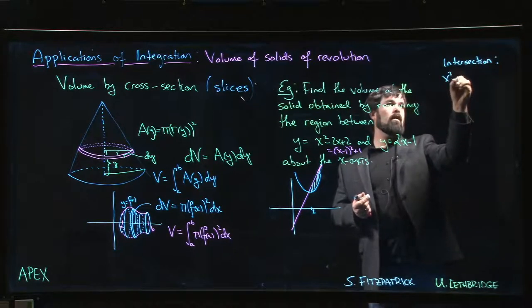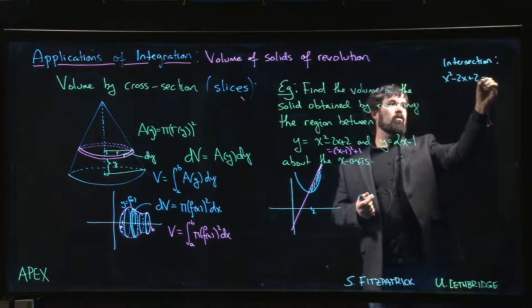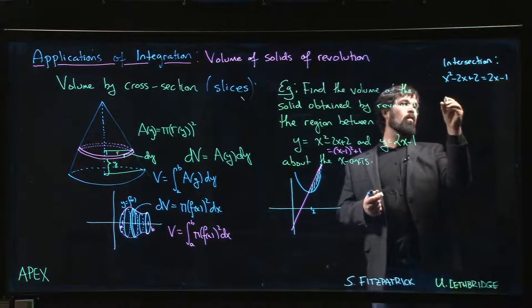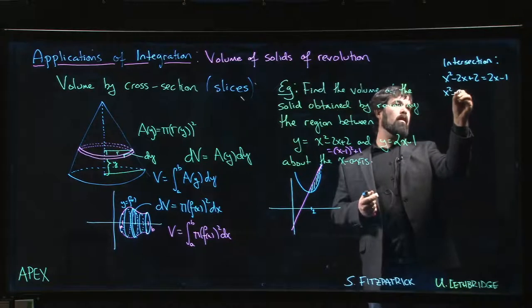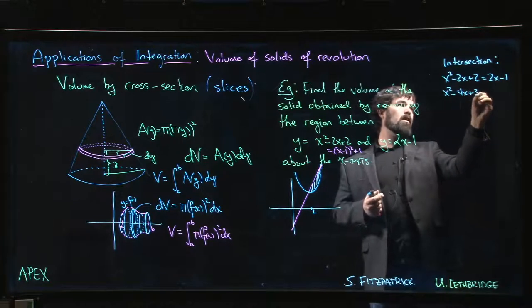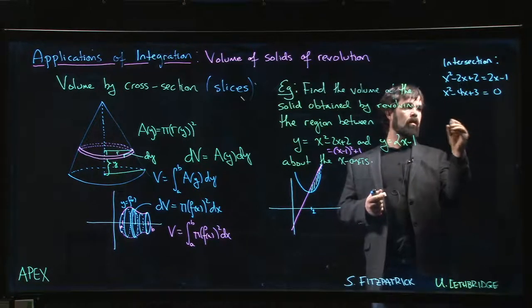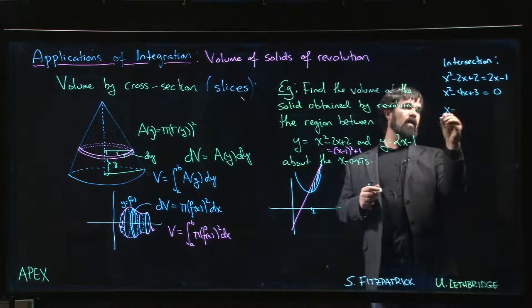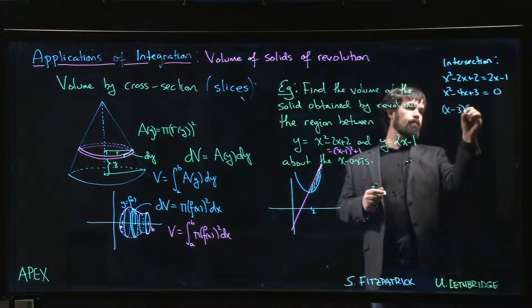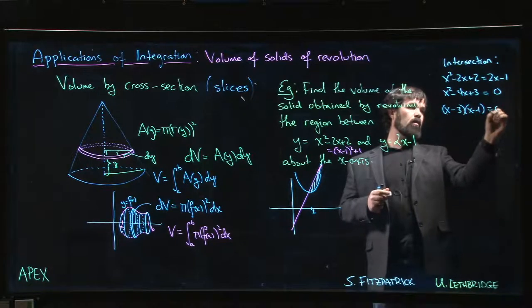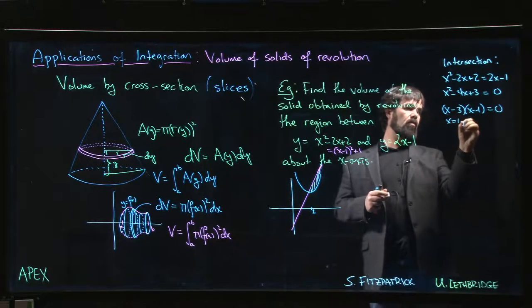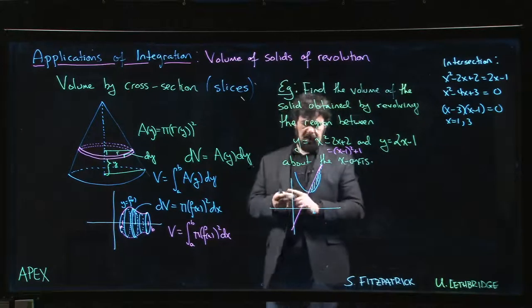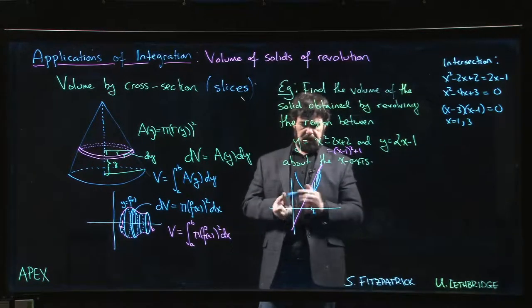x squared minus 2x plus 2 equal to 2x minus 1 gives me x squared minus 4x plus 3 equal to 0. Ah, so I would have been wrong, see? That's x minus 3 times x minus 1, right? So x is 1 or 3, which tells me my drawing is maybe not super accurate, but we can live with it.